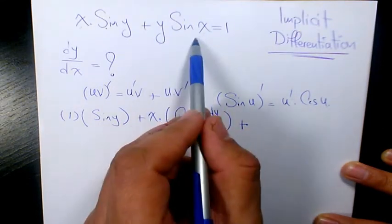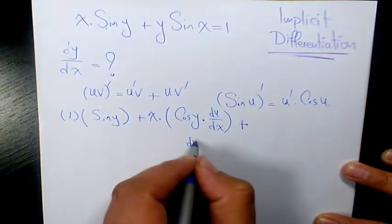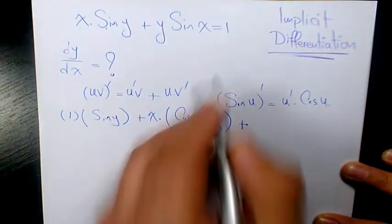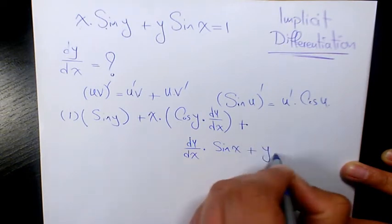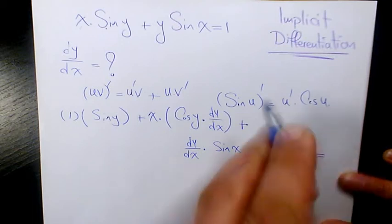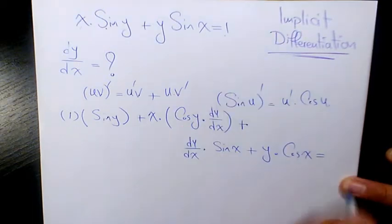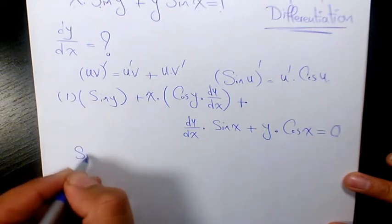Plus, for the second part we do the same thing. It's the derivative of y, which is dy over dx, times sine x, plus y times the derivative of sine x, which is cosine x, equals the derivative of 1 with respect to x, which is 0.